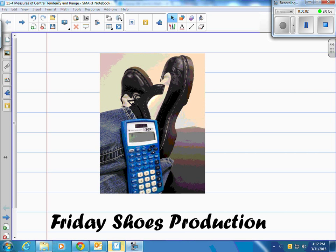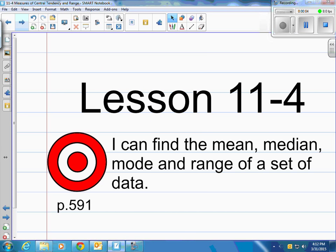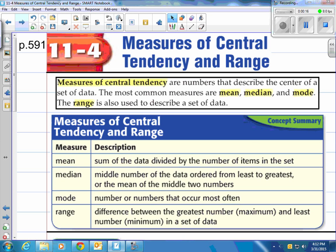This is the Friday Shoes production lesson 11-400 books on page 591. The target: I can find the mean, median, and mode and range of a set of data.